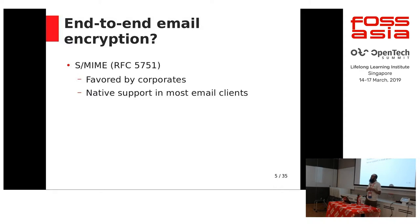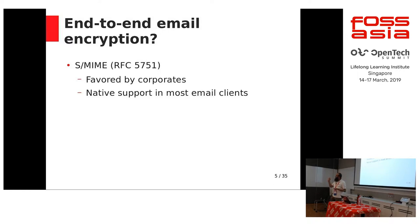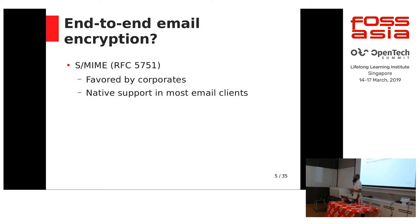The second technology is S/MIME, which is normally favored by companies because it works on certificates. Companies generate a per-user certificate when a new person joins, put it on a USB key, and give it to that person. When encrypting an email, the user inserts the USB key, enters the password, and the email is automatically encrypted. This is a centralized corporate way of encrypting and decrypting emails, but it requires infrastructure — a certificate server and more. Individuals normally prefer OpenPGP; companies prefer S/MIME. The advantage of S/MIME is that most email clients natively support it.